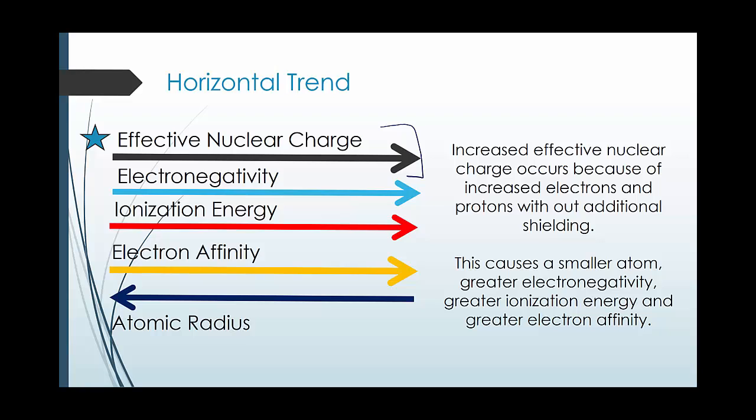This increased effective nuclear charge increases the electronegativity, the ionization energy, and the electron affinity. It also holds the electrons closer, and since most of the radius is made up of the electron density, it shrinks the atomic radius.